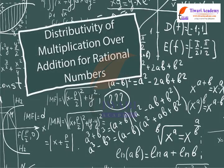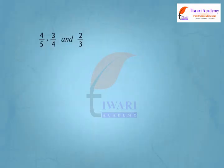Let us learn distributivity of multiplication over addition for rational numbers. To understand this, consider the rational numbers 4 upon 5, 3 upon 4, and 2 upon 3.